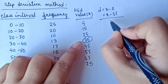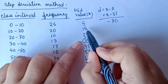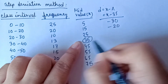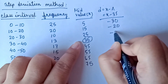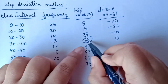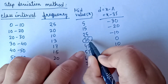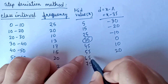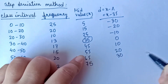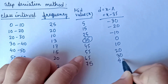With A equal to 35: 5 minus 35 equals minus 30, 15 minus 35 equals minus 20, 25 minus 35 equals minus 10, 35 minus 35 equals 0, 45 minus 35 equals 10, 55 minus 35 equals 20, 65 minus 35 equals 30, 75 minus 35 equals 40.